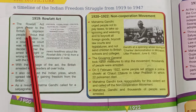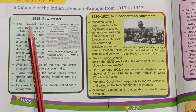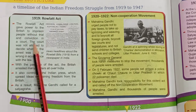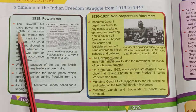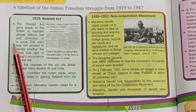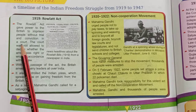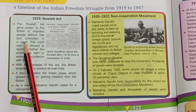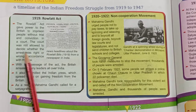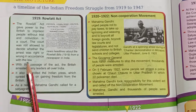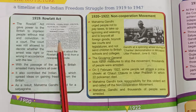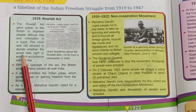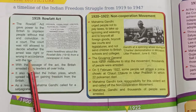In 1919, the Rowlatt Act gave power to the British to imprison people without trial and conviction in a court. The British could put any person in jail without any reason, and even the court was not allowed to decide whether the arrest was right or wrong according to the law.